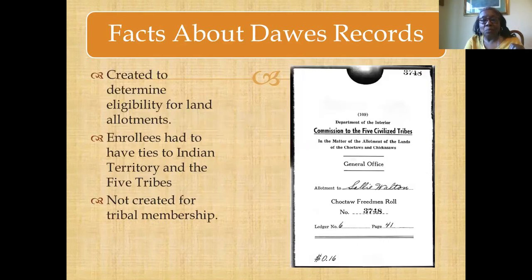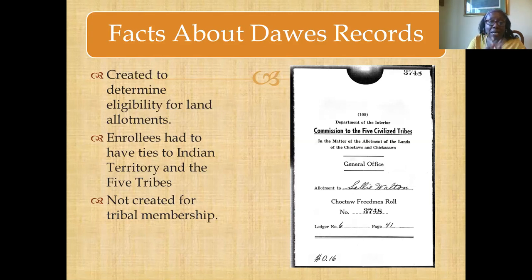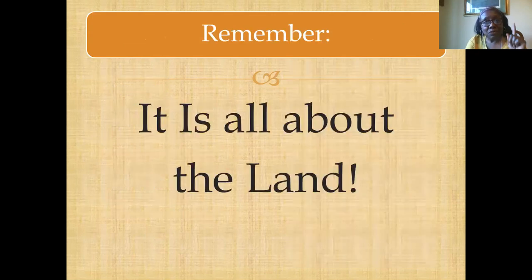Some facts about these records and what they actually are. First of all, they were created for a single purpose — and you cannot get away without talking about land. These records were created to determine eligibility for land allotments. Those who were enrolled had to have ties to Indian Territory and to one of the five tribes. They were created for tribal members. Remember this one fact: it is all about the land.